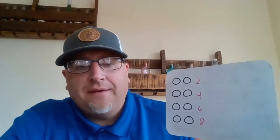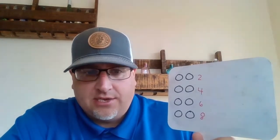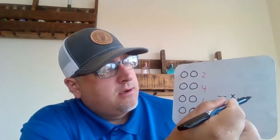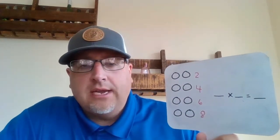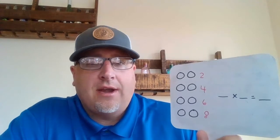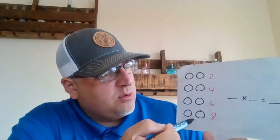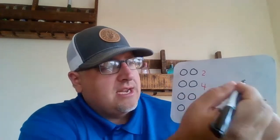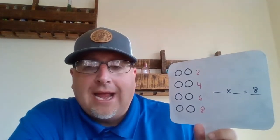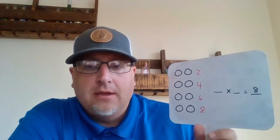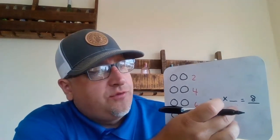We looked at this array, we counted two, four, six, eight — making things happen. So what we have to do is take this array and turn it into a multiplication sentence. In our multiplication sentence we're going to need things to multiply and we're going to need our answer. We already know our answer because we counted two, four, six, eight — we know there are eight circles in this array. So we can put that right in there. All we need to do is find the two factors.